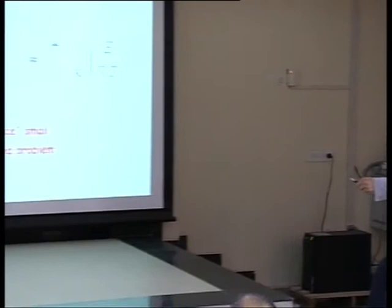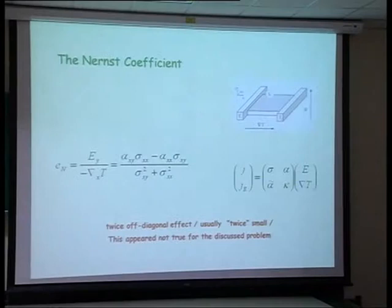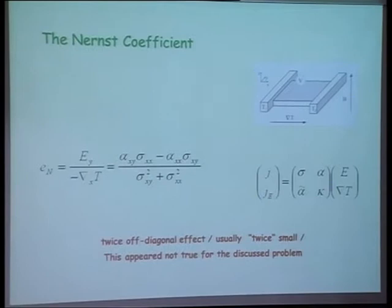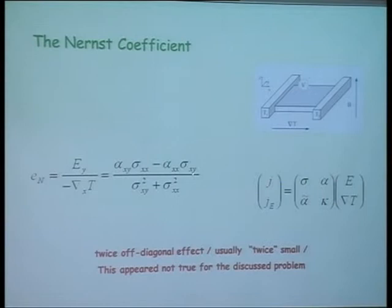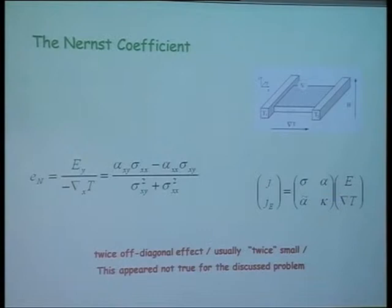What comes out is that it appears to be incorrect in the example we are discussing — the effect appears to be unexpectedly strong. I am going to try to explain why it is so. It is both theoretically and confirmed experimentally by measuring the angle, that only the first term contributes; the other one is negligibly small. So we are talking about this particular coefficient α_yx as the main contributor to the Nernst effect.